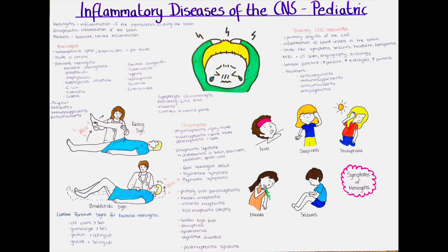For Listeria, Ampicillin is added. For Enterobacteria, Pseudomonas and Staphylococci, Vancomycin or Metronidazole can be used. For viral meningitis, antivirals such as Acyclovir can be used. Anticonvulsants may also be added if necessary, and low molecular weight heparin such as Clexane is given to prevent thrombosis.